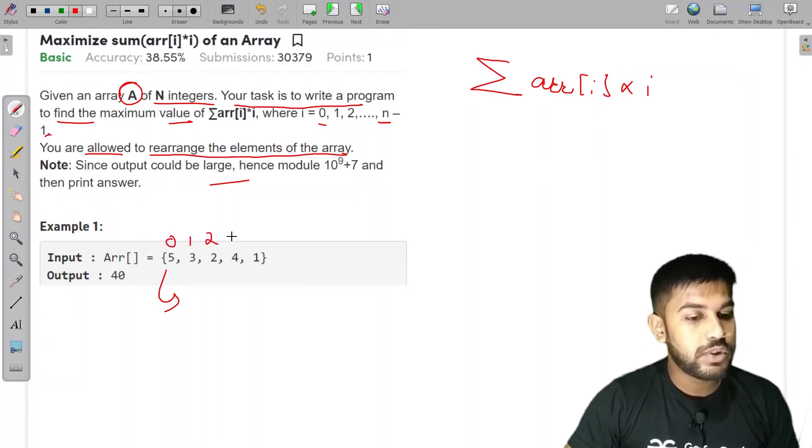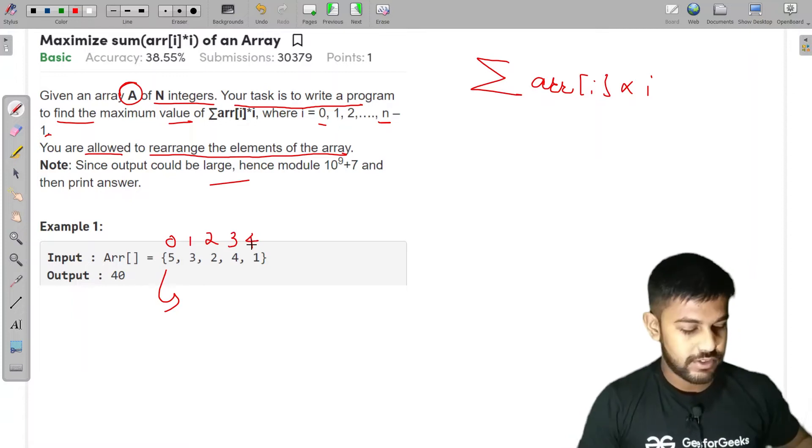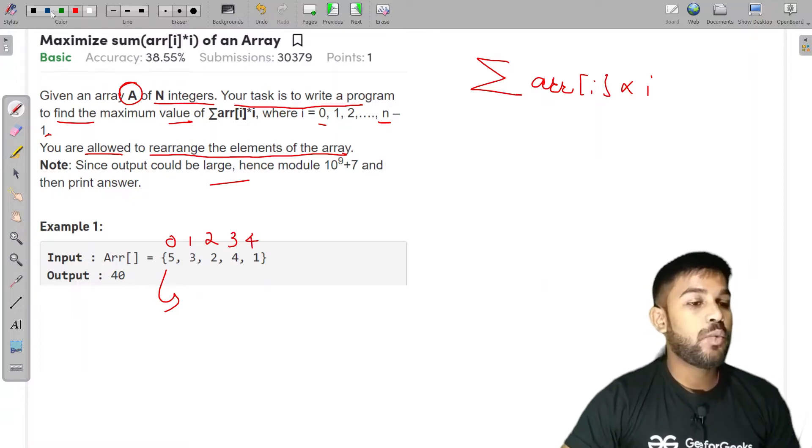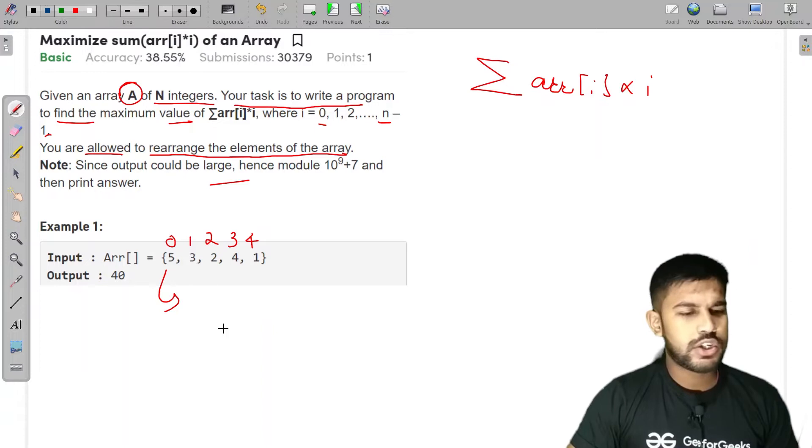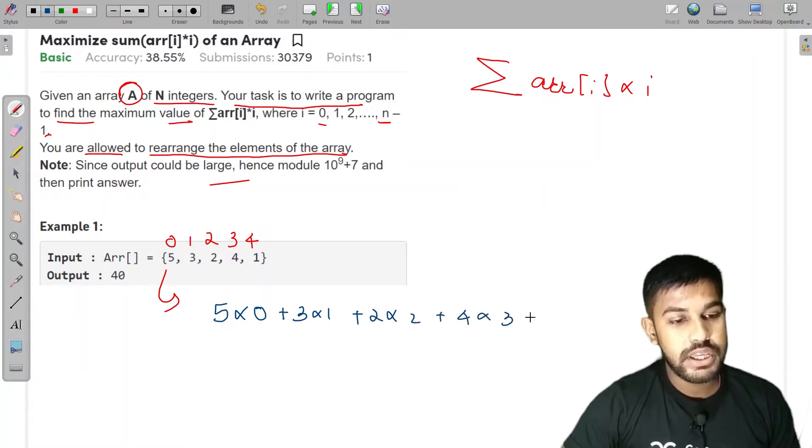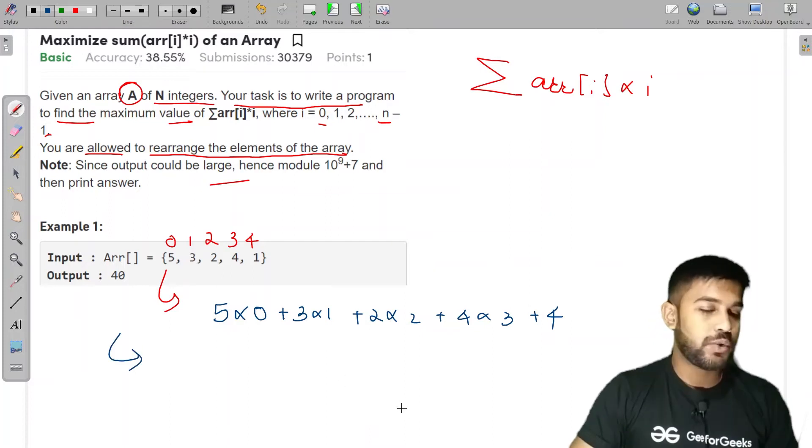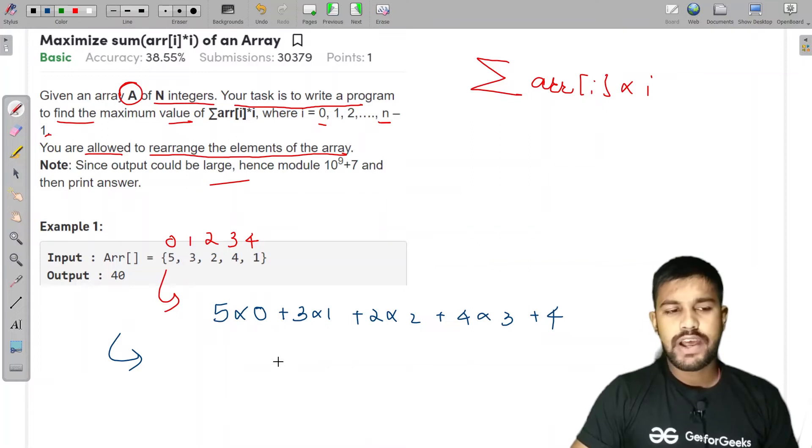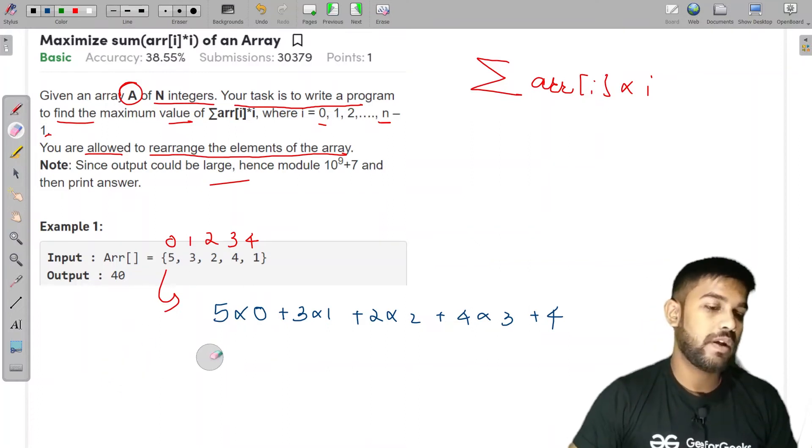This would be 0, this would be 1, this would be 2, this would be 3, this would be 4 itself. So now, what would be the sum of this? Let us not think about maximizing and all. Let us take out the sum. The sum would be 5 into 0 plus 3 into 1 plus 2 into 2 plus 4 into 3 plus 4. This is the value. After doing the multiplications and all, you would be having the value and whatever the value it is, we are not interested as of now.